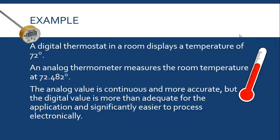So let's think about a temperature. A digital thermostat in a room displays a temperature of 72. The analog thermometer actually measures the room temperature of 72.482. So if you're checking the temperature in the room, do you need to know that it's 72.482? No, the 72 is perfectly adequate.